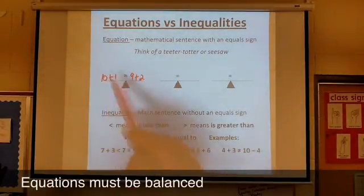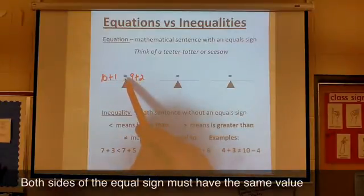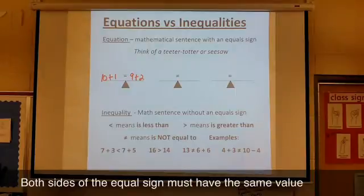We have 10 plus 1 is 11, also 9 plus 2 is 11. If you have an equal sign in the middle, then both sides have to be worth the same amount.